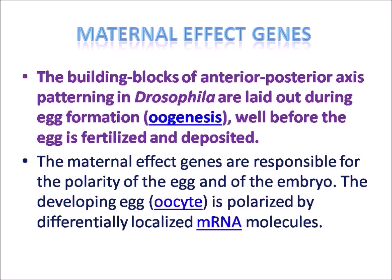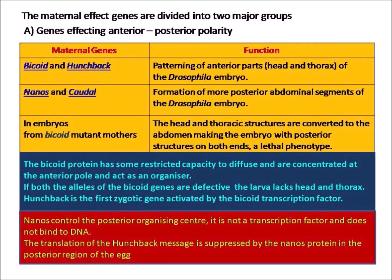The building blocks of anterior-posterior axis patterning in Drosophila are laid out during egg formation, or oogenesis, well before the egg is fertilized and deposited. The maternal effect genes are responsible for the polarity of the egg and of the embryo. The developing egg or oocyte is polarized by differentially localized mRNA molecules. The maternal effect genes are divided into two major groups: genes affecting anterior-posterior polarity, and genes affecting dorsal-ventral polarity. The maternal genes bicoid and hunchback function in patterning of the anterior parts — head and thorax — of the Drosophila embryo, while nanos and caudal are involved in the formation of more posterior abdominal segments.